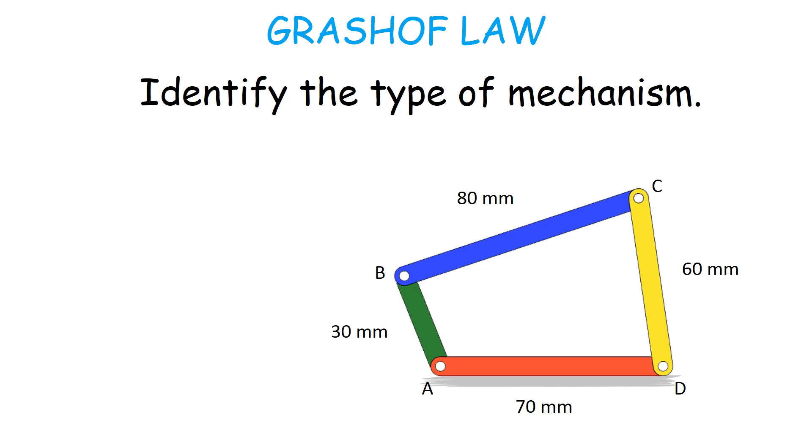Let's walk through the solution. To identify the type of mechanism, first we need to check if the given linkage satisfies the Grashof's condition or not.